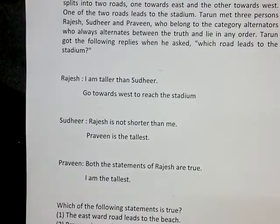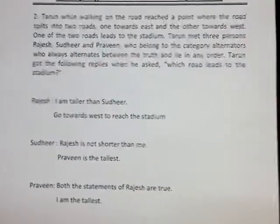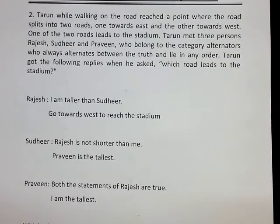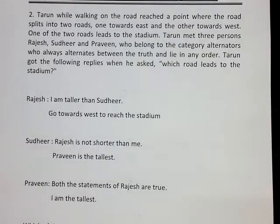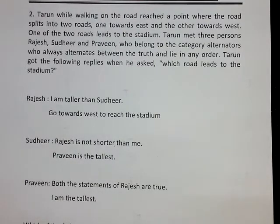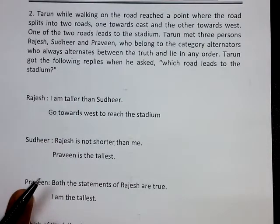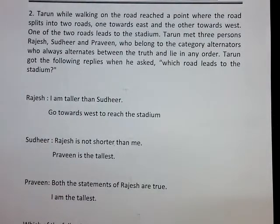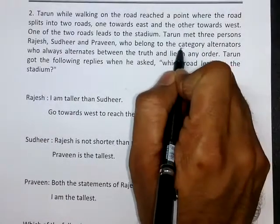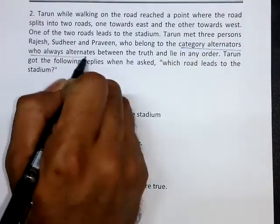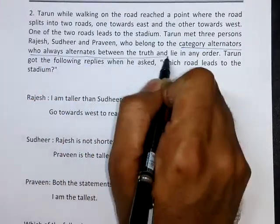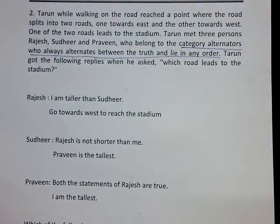Hello, my dear friends. I assume that you have attempted the second question before watching this video. In this question, we can see that Rajesh, Sudhir, and Praveen — the three people involved — are all alternators. It is mentioned in the question very clearly that every person involved is an alternator.